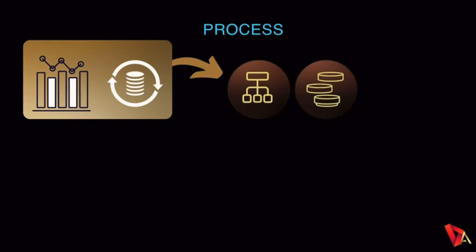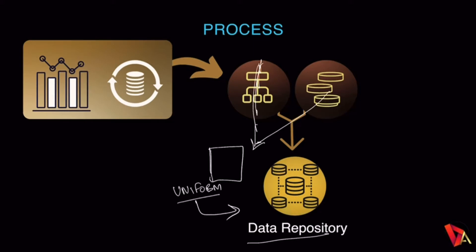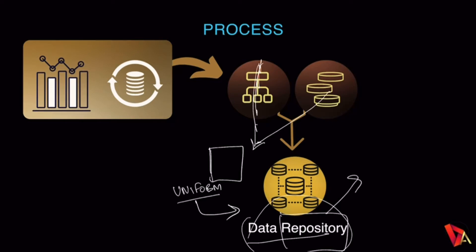After this, both structured and unstructured data are converted into a data repository. When you take the data from structured and unstructured sources and create a uniform database, you save it in a data repository. A data repository is basically a database which collects small pieces of data and is accessible to every person who has access to it.